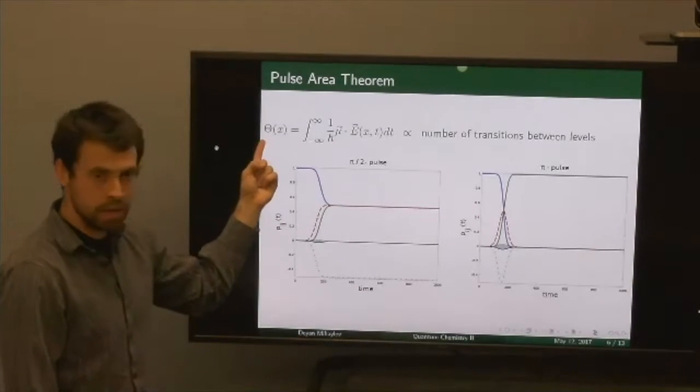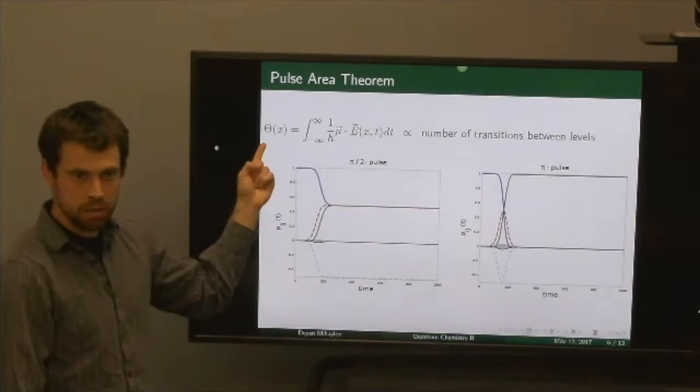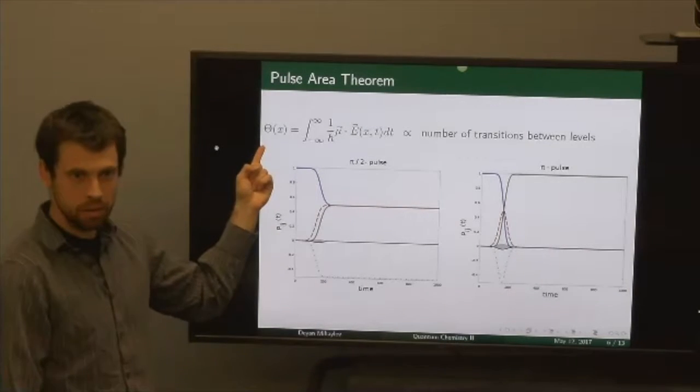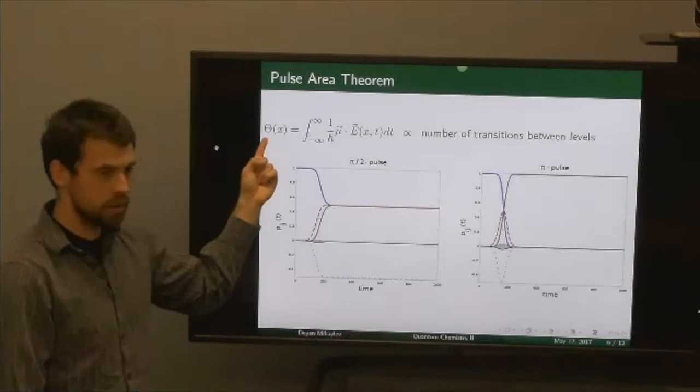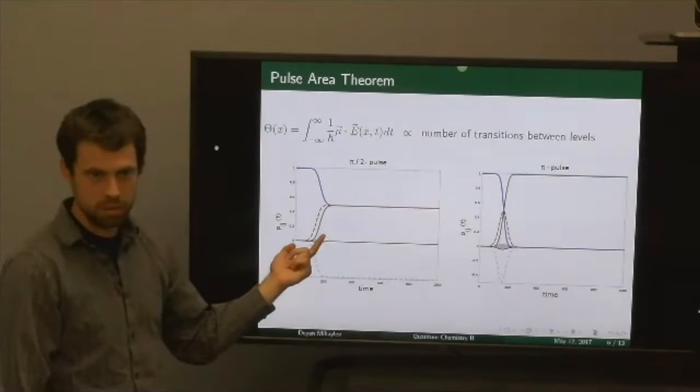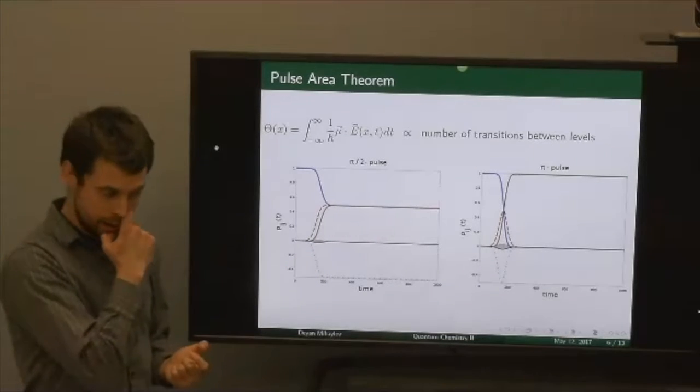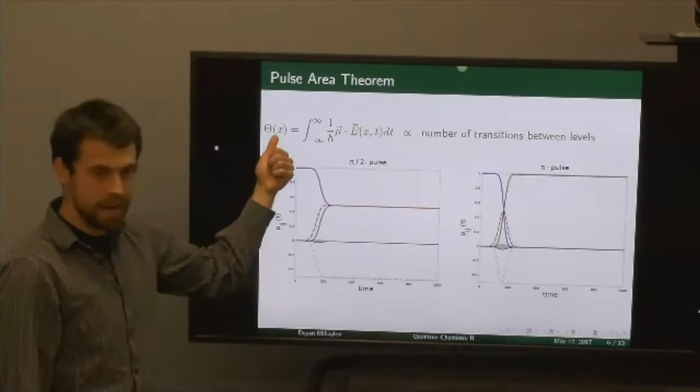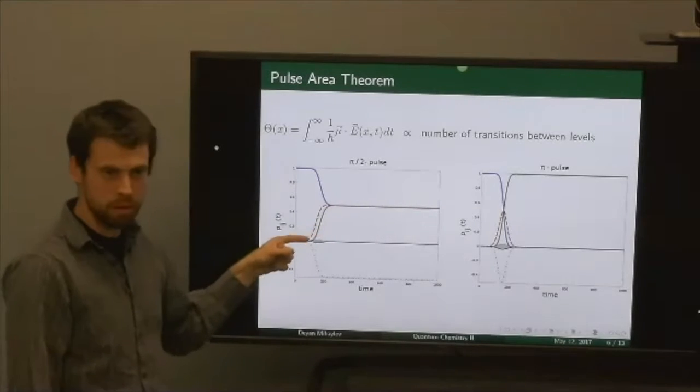The pulse still has some x-dependence because it's usually not a rectangular pulse. Although we started with a rectangular pulse in class, we saw that a Gaussian pulse is more realistic. So the x-dependence just tells you the shape, the envelope of the pulse.